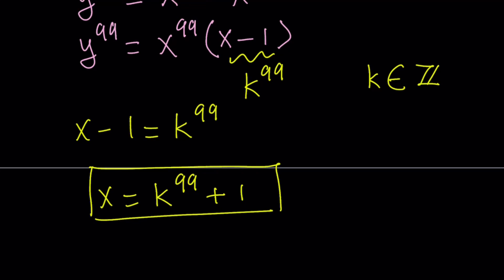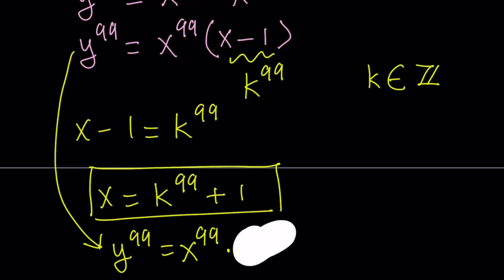What about y? How do you find y? So y is going to come from this equation. Let's go ahead and copy that here. Here, we have y to the power 99 equals x to the power 99 times t, well, actually, not t. I changed it to k. I was thinking about t originally, but anyways, k seems like a better choice. So k to the power 99.